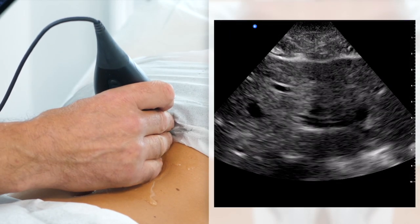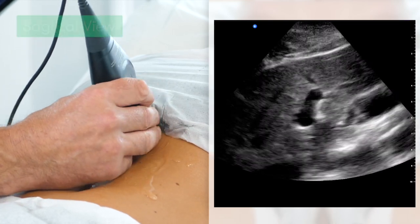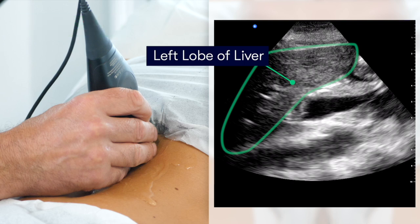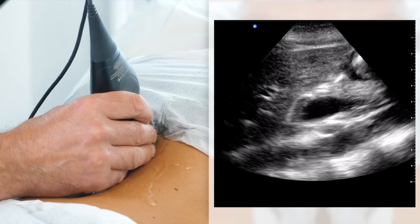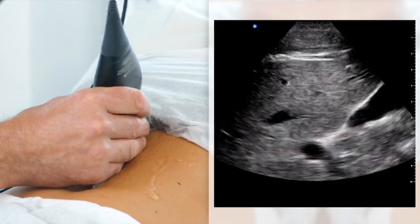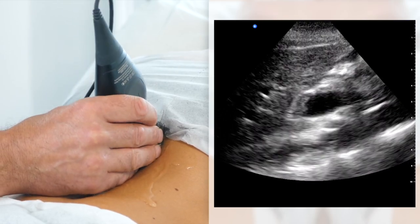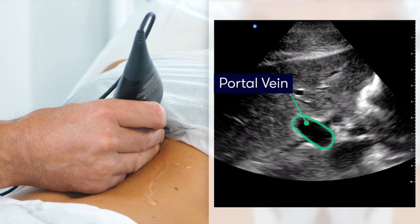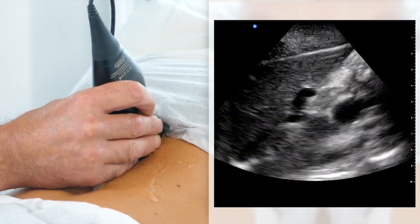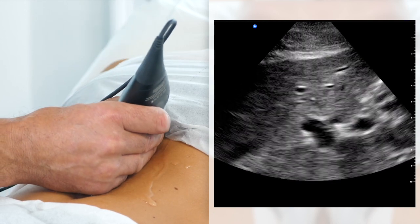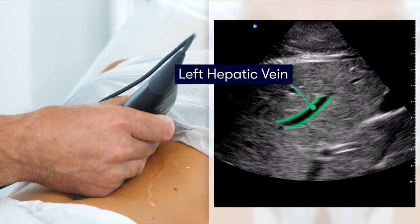Going from looking in the transverse plane over the epigastrium, we're now going to look in the sagittal plane. We can see the left lobe of the liver going from the right side through to the left side of the image — the triangular shaped structure in the foreground. Within the left lobe of the liver, we're again able to visualise the portal veins, which we can recognise due to the echo bright margin on their walls. As we go more to the right side, we can see the left main hepatic vein, which doesn't have echoes in the wall — this is how we tell the difference between hepatic veins and portal veins.